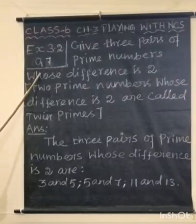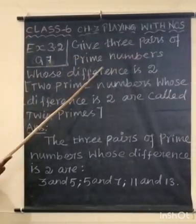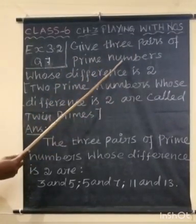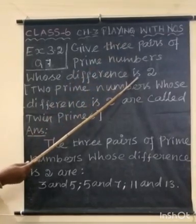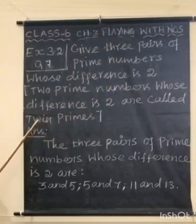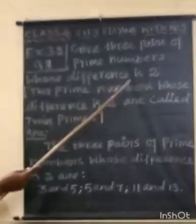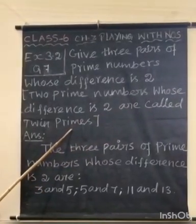Question number 7: Give 3 pairs of prime numbers whose difference is 2. Definition of twin primes: Two prime numbers whose difference is 2 are called twin primes.